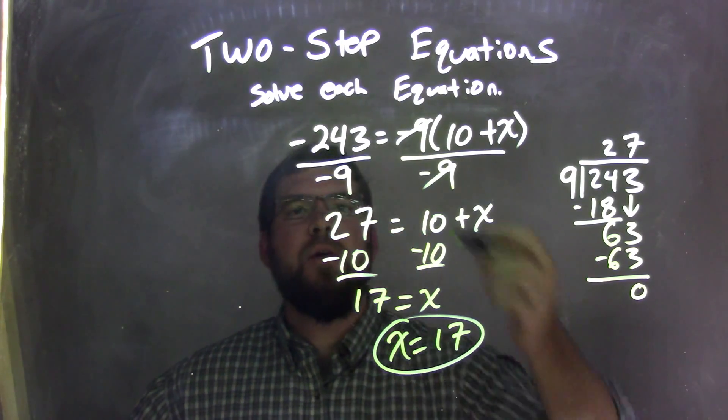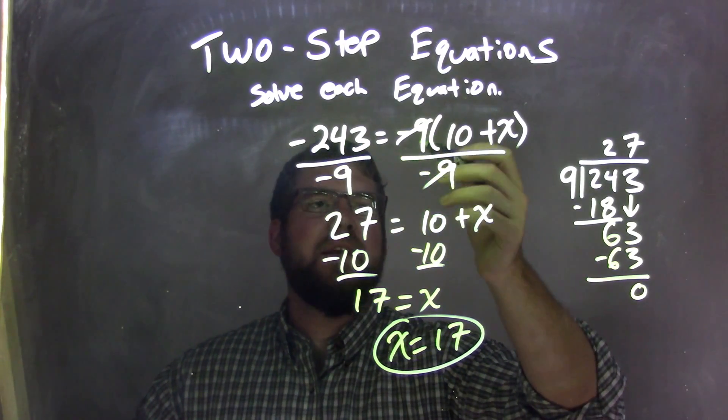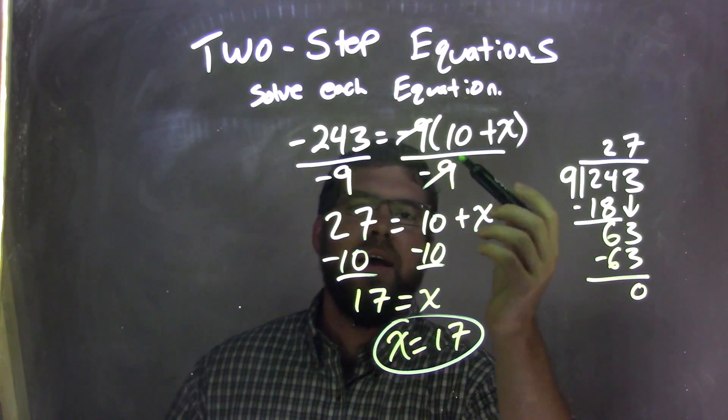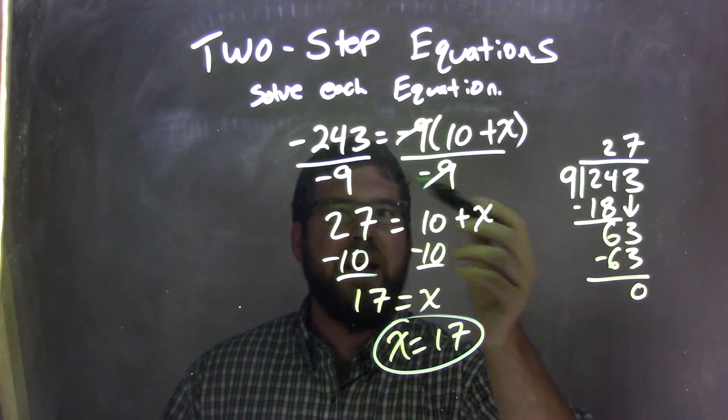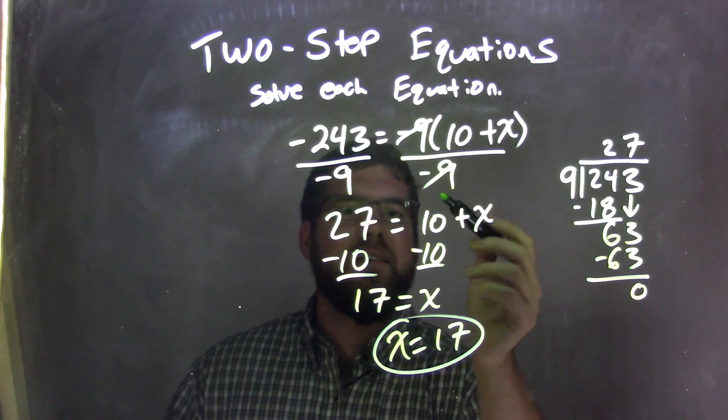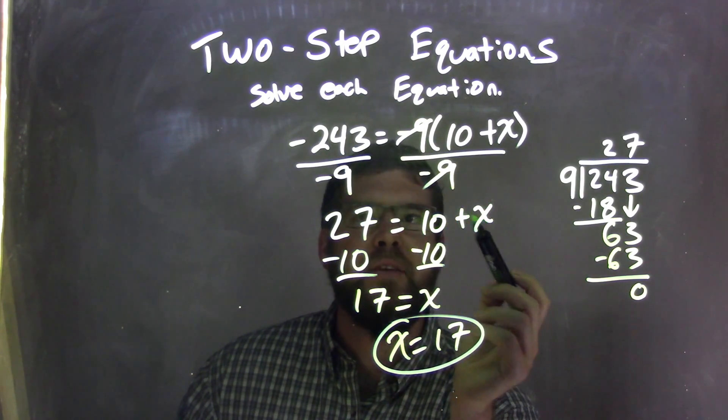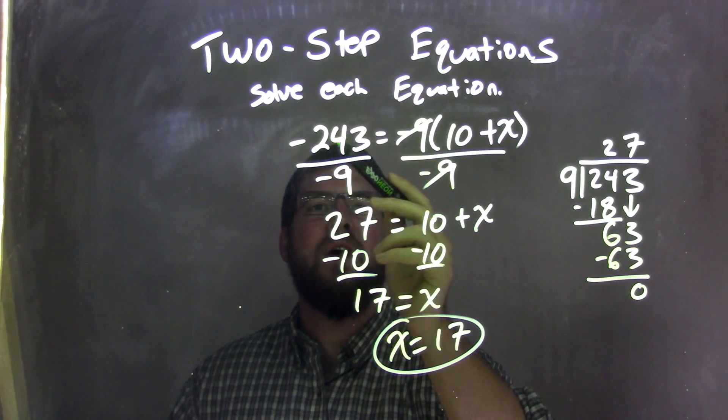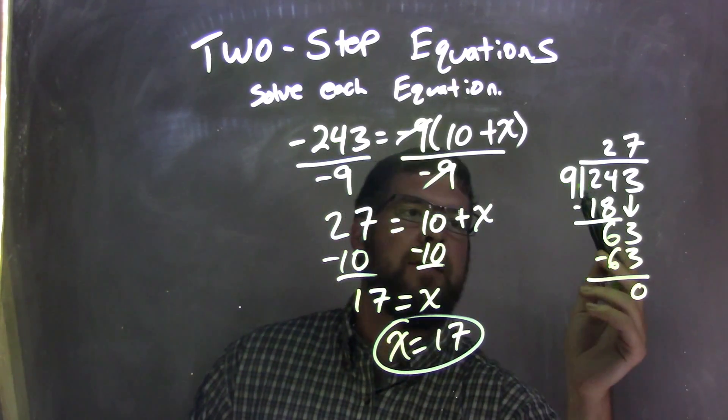So let's recap. We have negative 243 equals negative 9 times 10 plus x. I have multiplication going on here. I have some multiplication/division, so I divide by negative 9 to both sides. Negative 9s cancel, don't need the parentheses anymore, and I'm left with 10 plus x. Negative divided by negative is a positive. So we have to think about what's 243 divided by 9. We did long division.